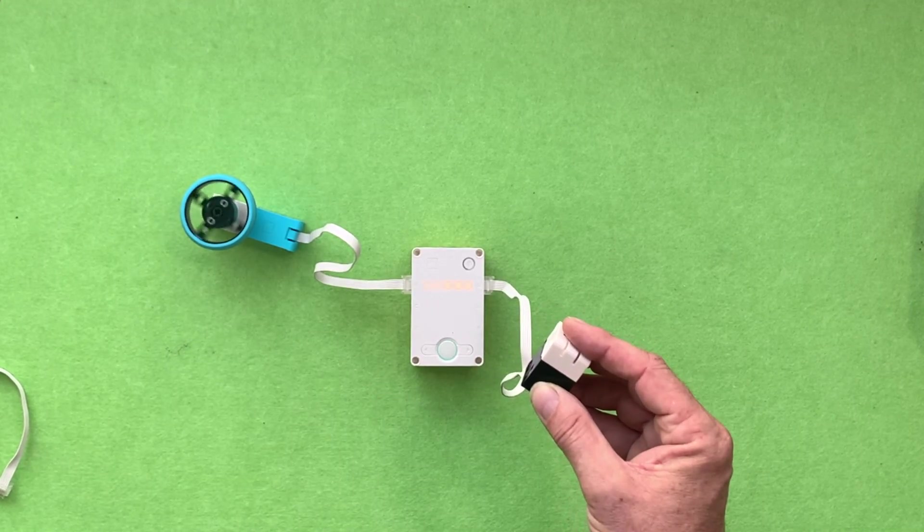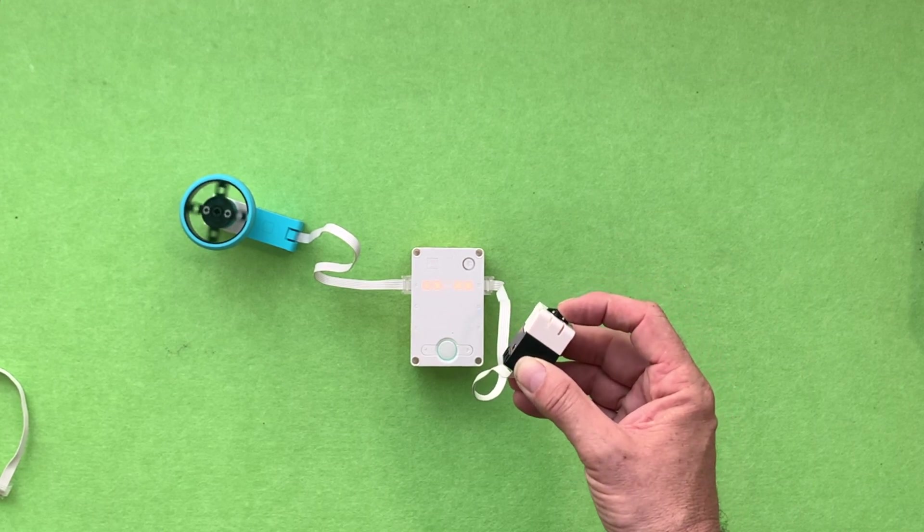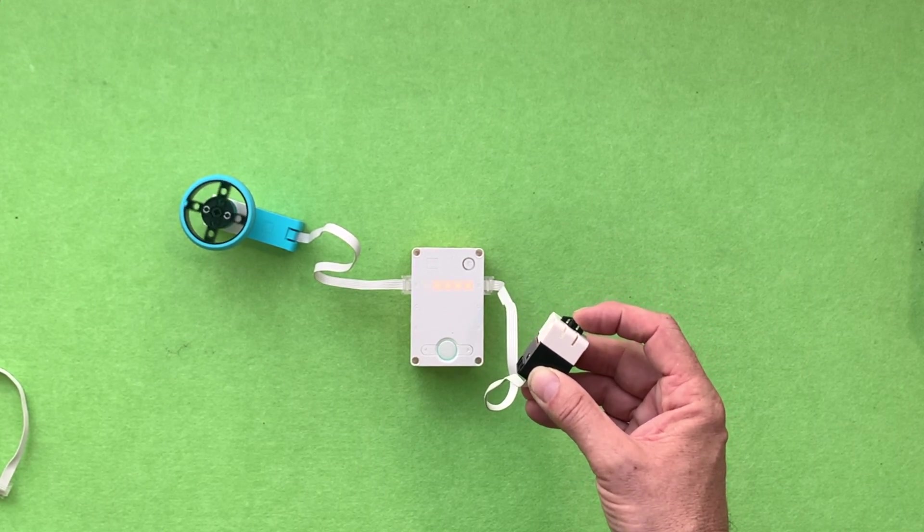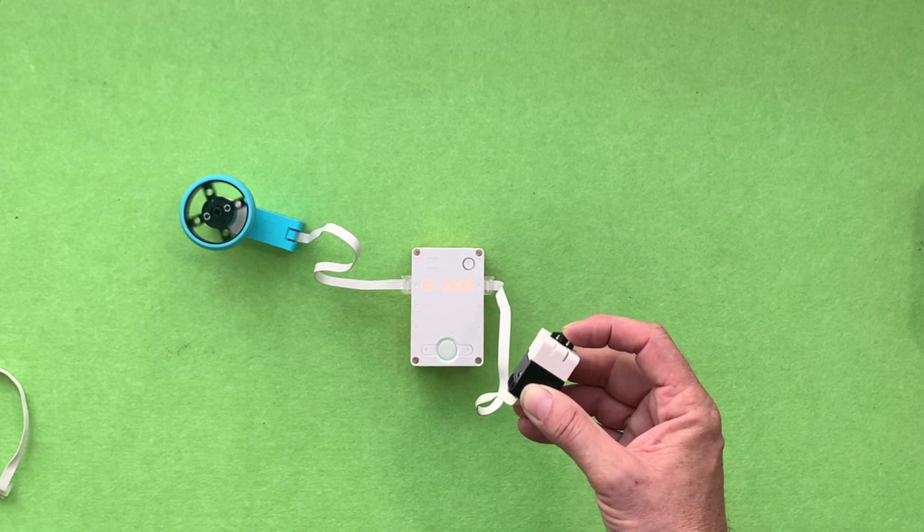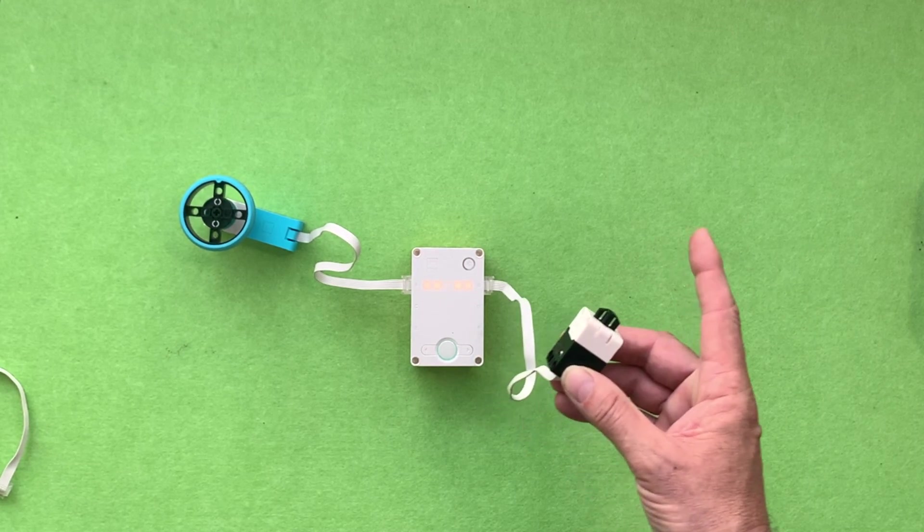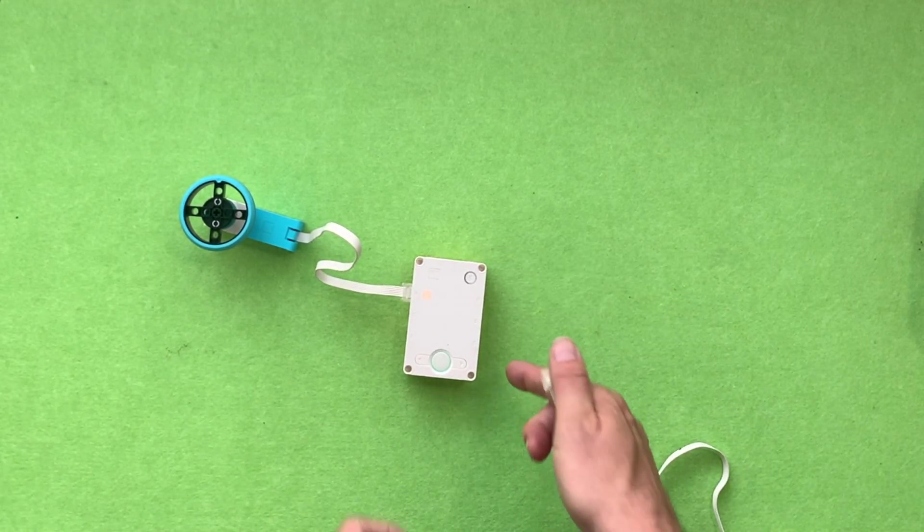We're going to plug in a force sensor. If you plug the force sensor in, then you can control the speed of the motor by pressing down on the button. The harder you press, the faster it goes. So the more force there is, the faster the motor will spin.